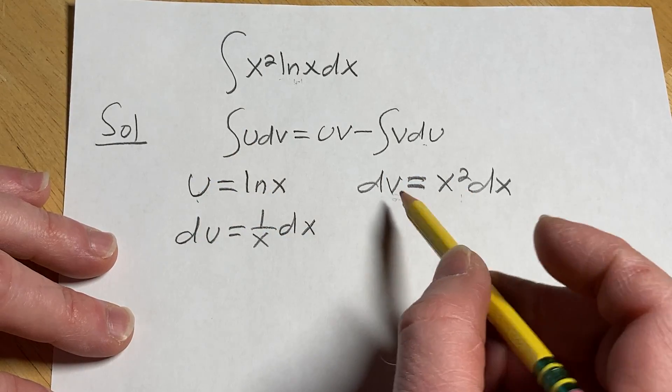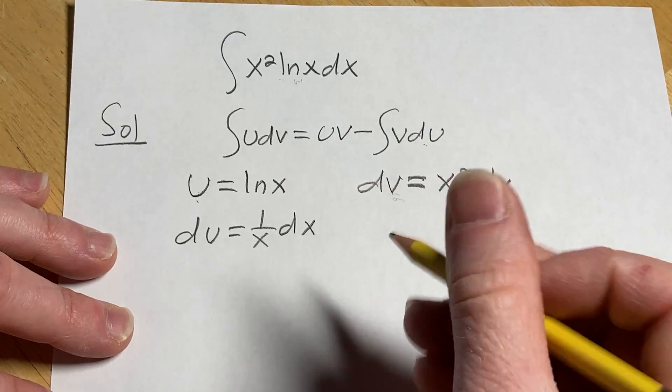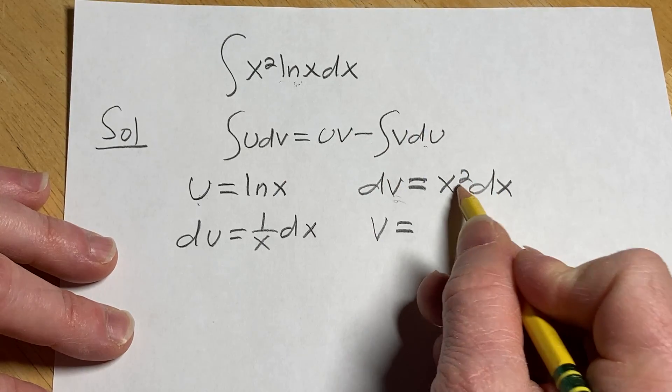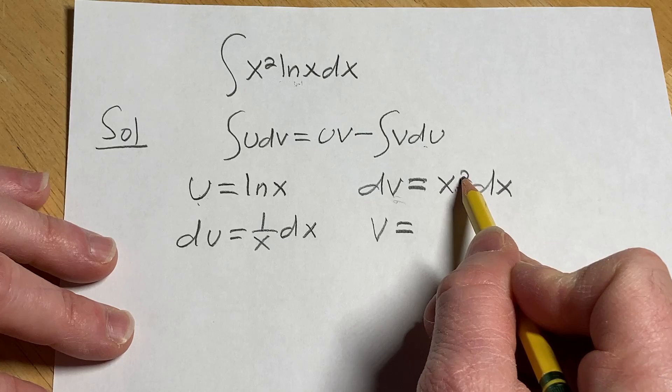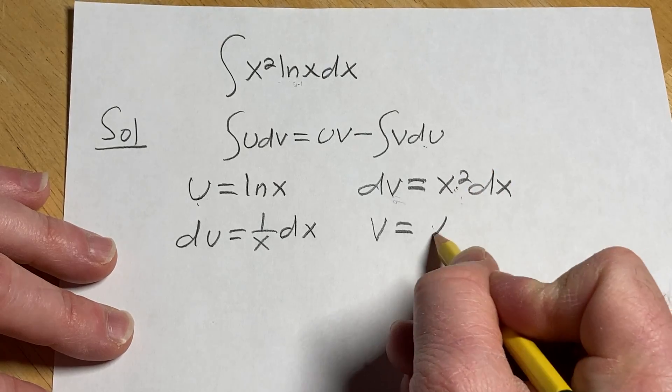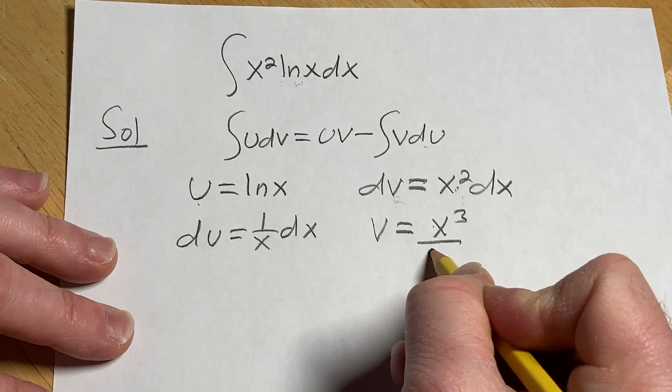Here we have to integrate both sides. Integrating dV is going to give us V. Integrating x squared we'll use the power rule, so we add 1 to the exponent and divide by the result. So it'll be x cubed over 3.